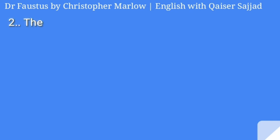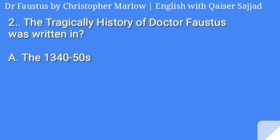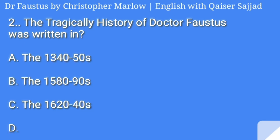The Tragical History of Dr. Faustus was written in: 1340-50s, 1580-90s, 1620-40s, or 1601? The correct option is B, 1580-90s.